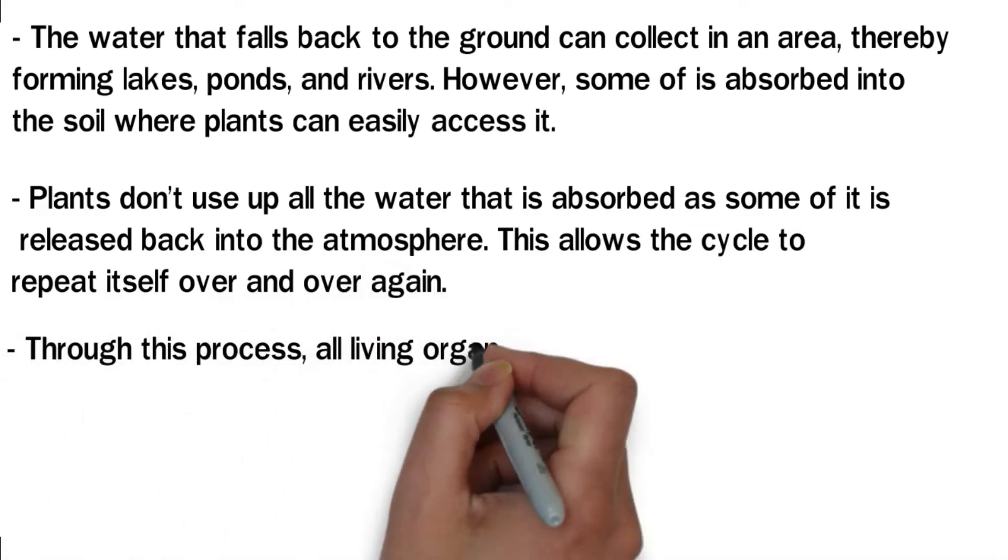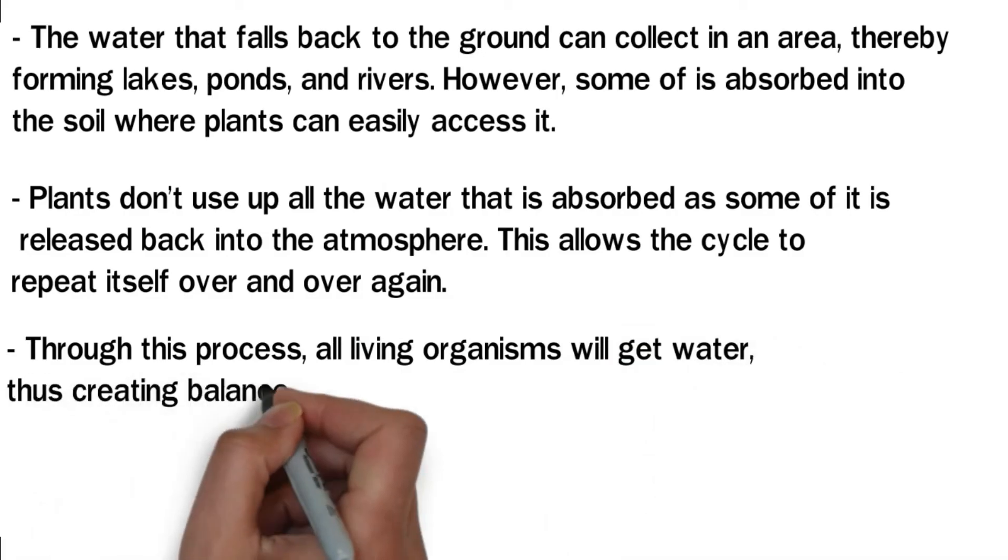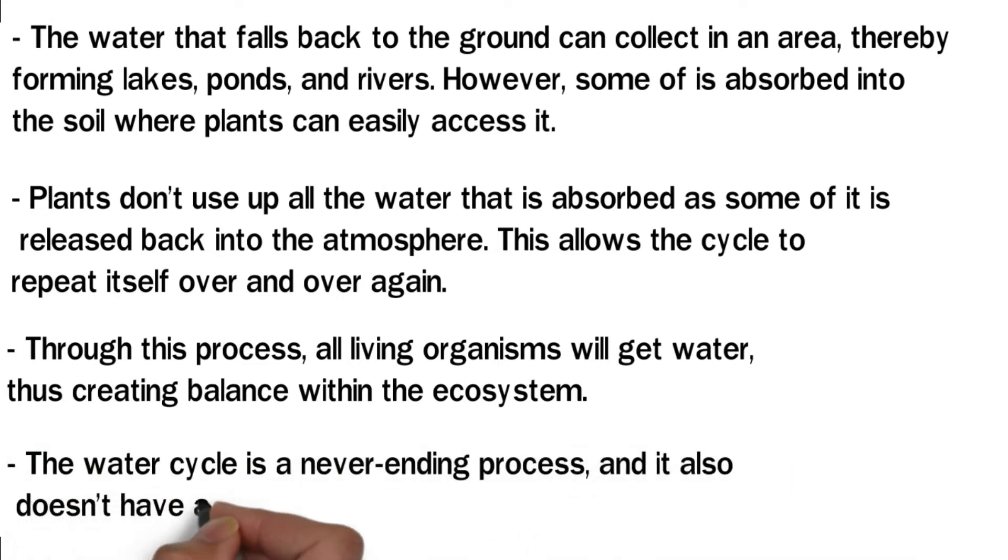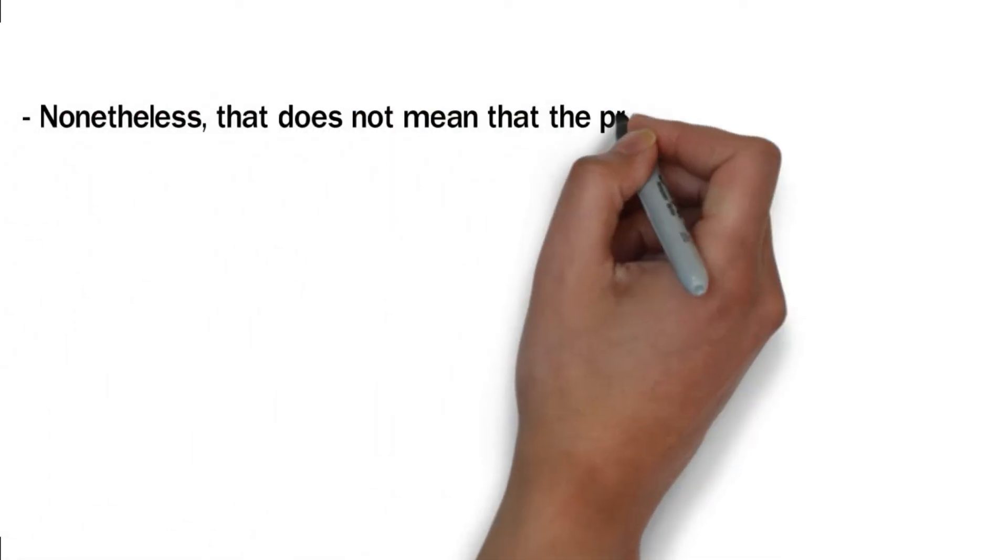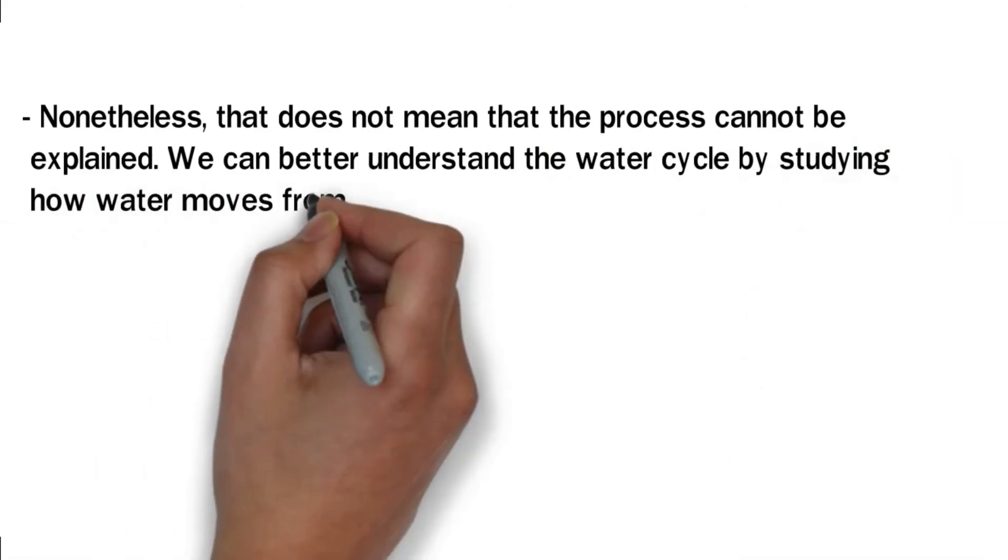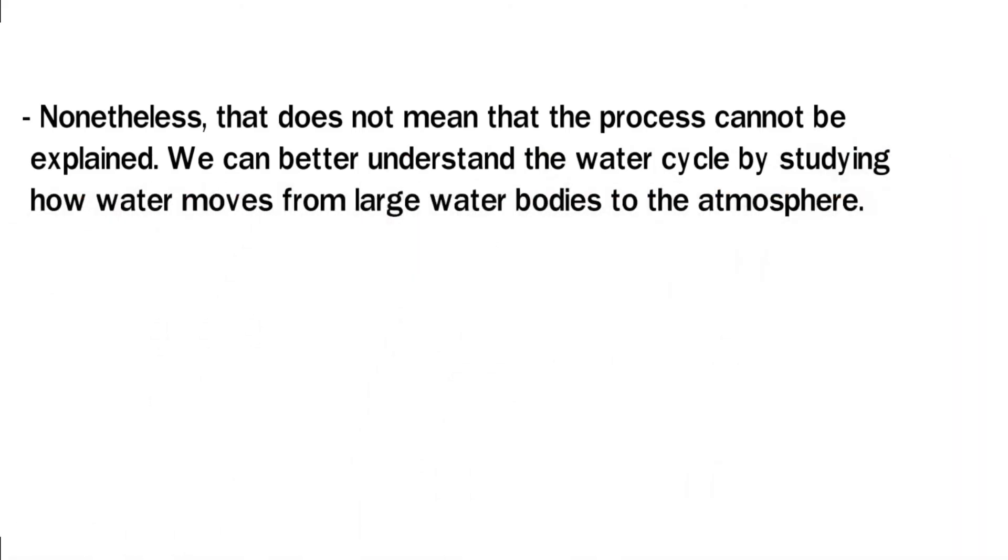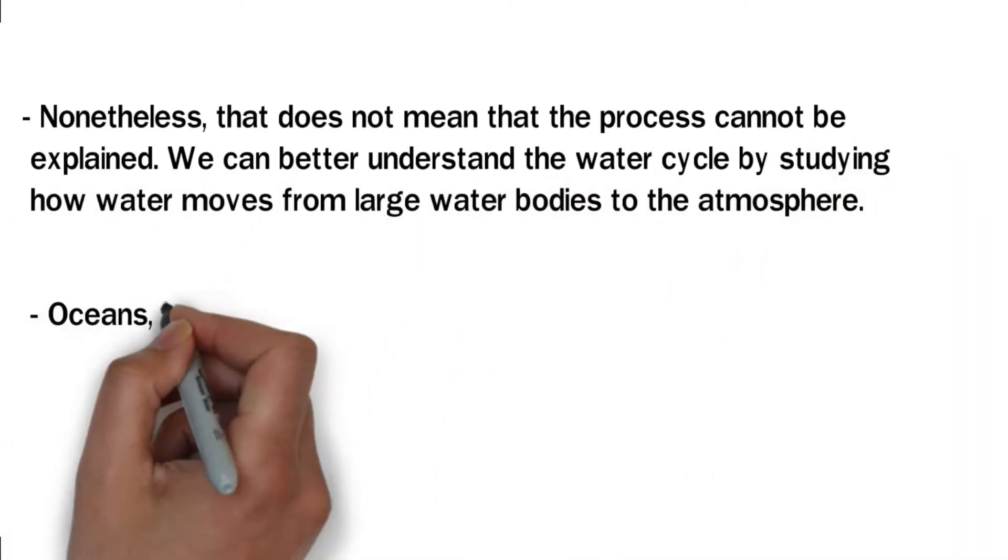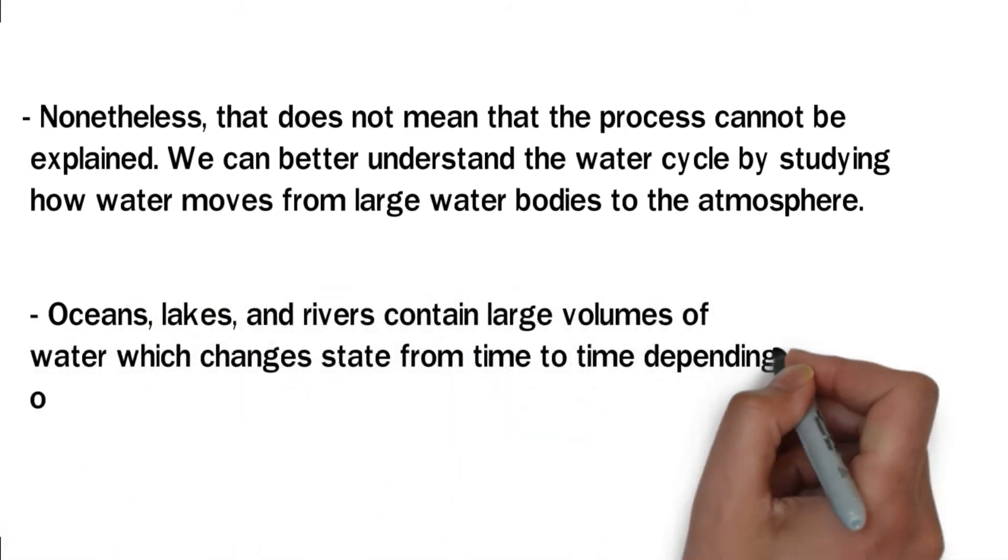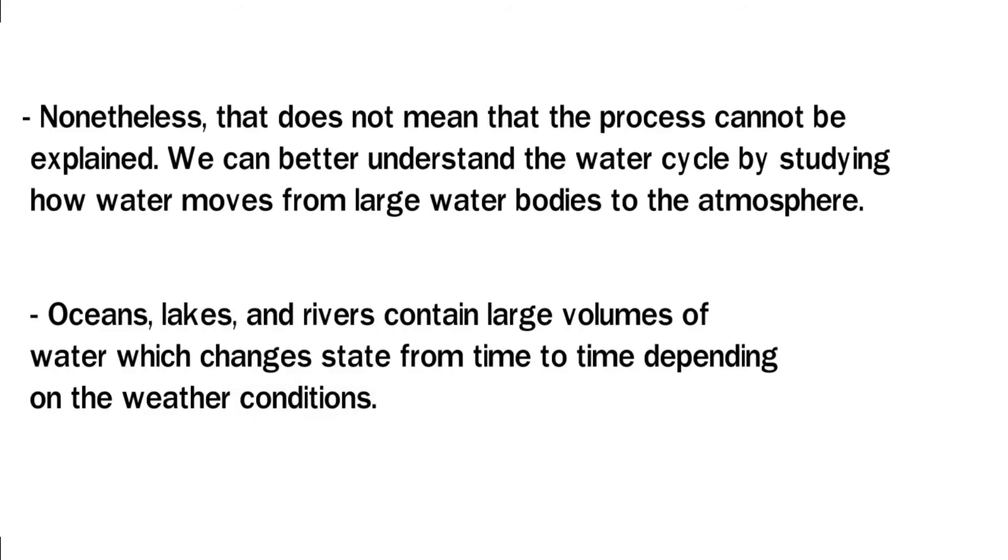Through this process, all living organisms will get water, thus creating balance within the ecosystem. The water cycle is a never-ending process, and it also doesn't have a specific starting point. Nonetheless, that does not mean that the process cannot be explained. We can better understand the water cycle by studying how water moves from large water bodies to the atmosphere. Oceans, lakes, and rivers contain large volumes of water, which changes state from time to time depending on the weather conditions.